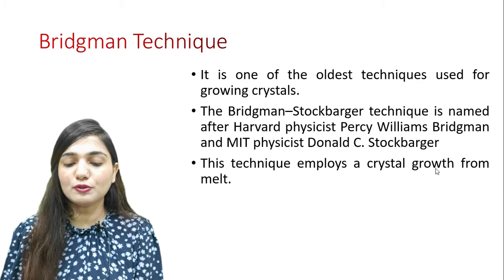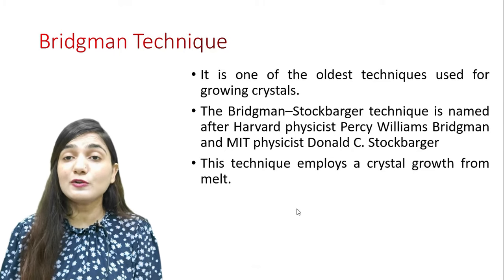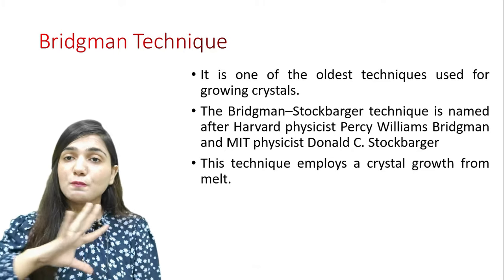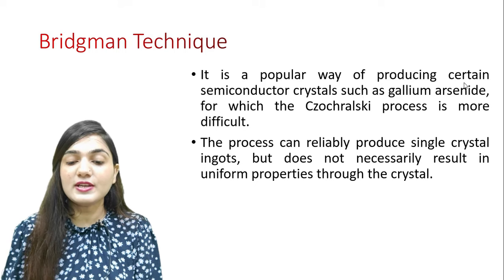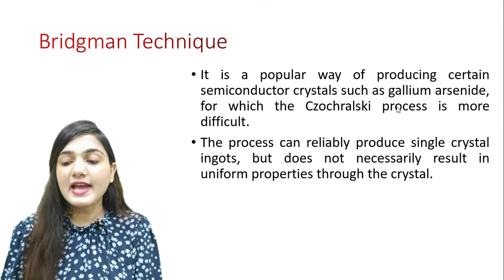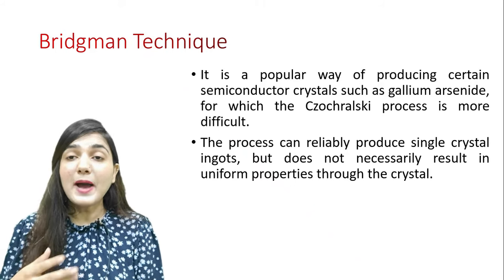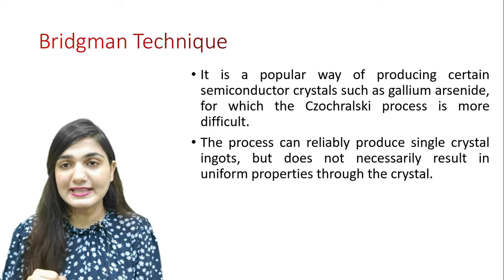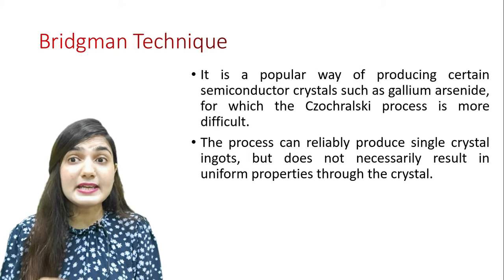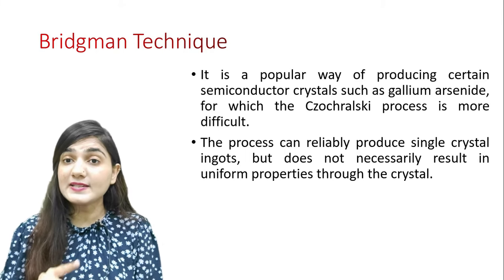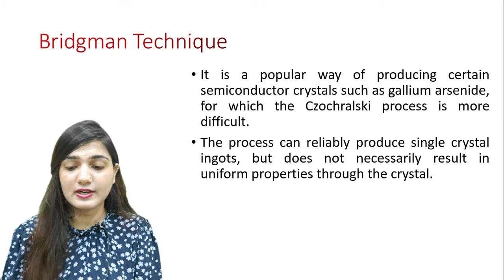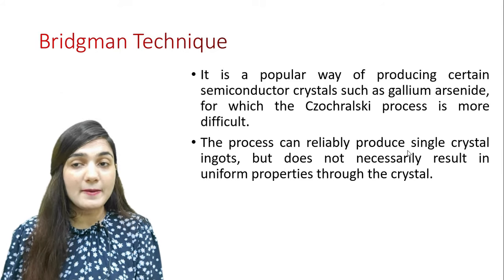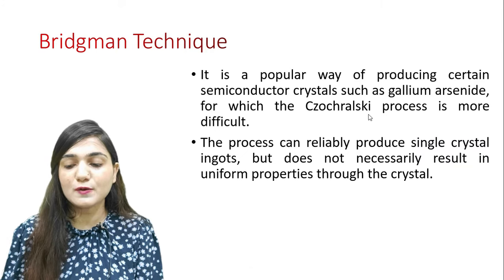In this technique, we have crystal growth from the melt — we first melt the crystal. It is a popular way of producing certain semiconductor crystals, like gallium arsenide, for which the Czochralski process is more difficult. So when we have compound semiconductors, we prefer to use the Bridgman technique. Whereas for silicon or germanium in single crystal form, the Czochralski technique is more popular.